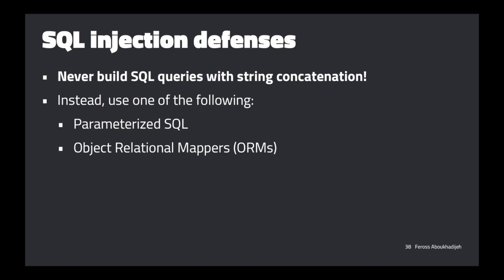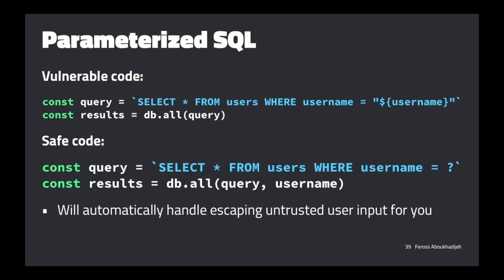The simple solution is parameterized SQL. You never want to build SQL queries using string concatenation. Instead, call a function that combines untrusted user input with the query, inserting input in the correct place. In the vulnerable version we used JavaScript template strings with backticks. The safe way is to swap that out with a question mark and pass the untrusted user input as additional arguments to the db.all function, which will escape it correctly.